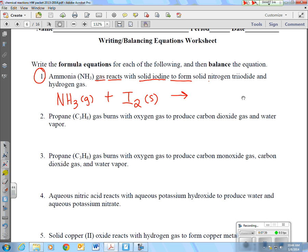To form means I need an arrow. Solid nitrogen triiodide. So whenever you see a prefix, that means this is molecular. So there's one nitrogen, and there's three iodines, and it's solid. And, plus sign, hydrogen gas. So don't forget, hydrogen is a diatomic. And don't forget your G for gas. And then lastly, you do need to balance this as well.